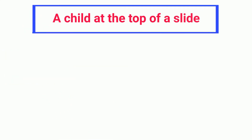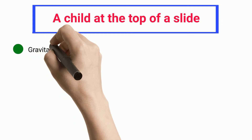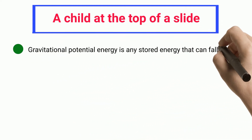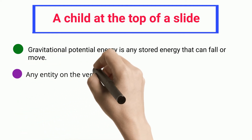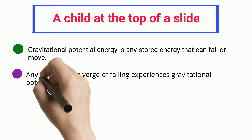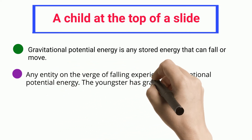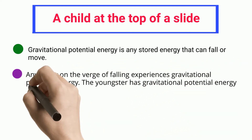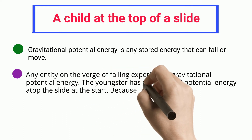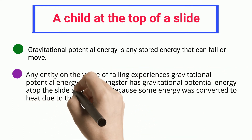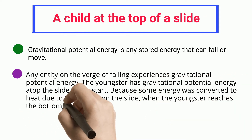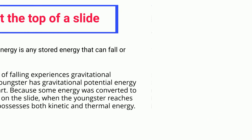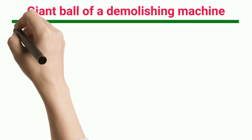A child at the top of a slide experiences gravitational potential energy, as any entity on the verge of falling does. At the start, some energy is converted to heat due to friction on the slide. When the youngster reaches the bottom, he or she possesses both kinetic and thermal energy.